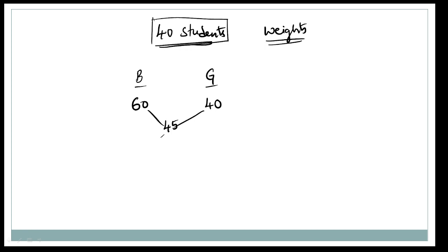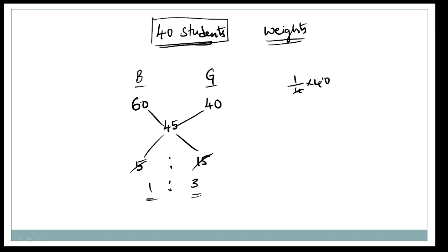What is the difference? 60 minus 45 is 15, and 45 minus 40 is 5. So the ratio is 5 to 15, which is 1 to 3. Boys are 1 part and girls are 3 parts, making 4 total parts out of 40 students. So boys are 10 and girls are 30.